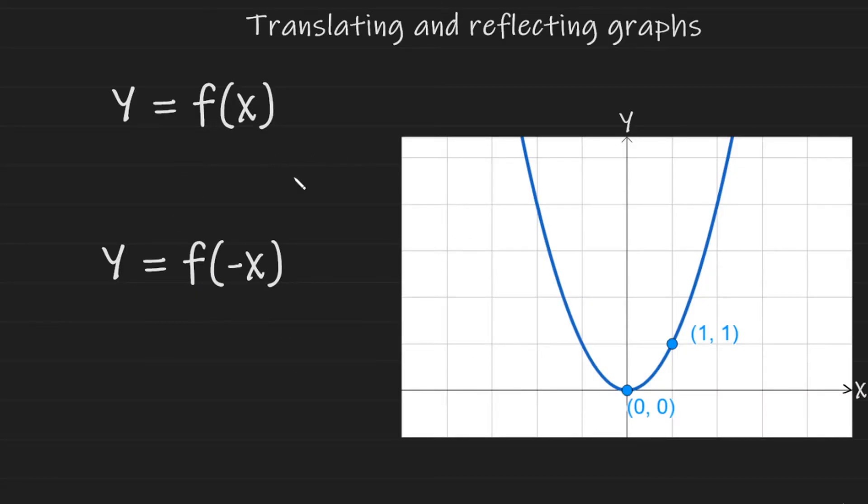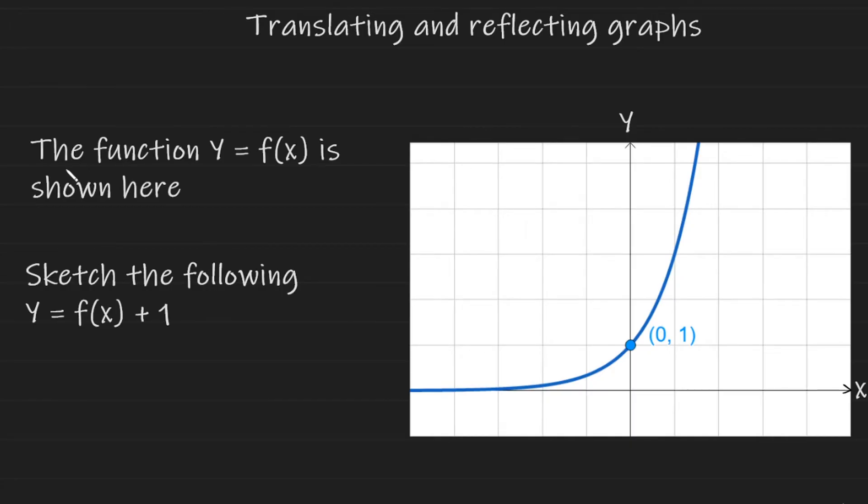Okay, now let's use all of this knowledge and understanding to answer some typical questions that you may get. In this question, they tell us the function y equals f of x is shown here. This is an exponential function. They ask us to sketch the following: y is equal to f of x plus 1. So this is on the outside of the brackets. Therefore, it should translate the entire graph up by 1.